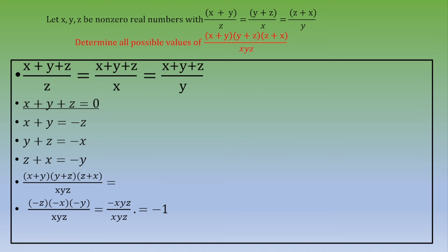The second case is when x+y+z is different from zero. Then we take the first two terms. Because this is nonzero, we can divide by x+y+z on both sides, and we end up with 1/z = 1/x.